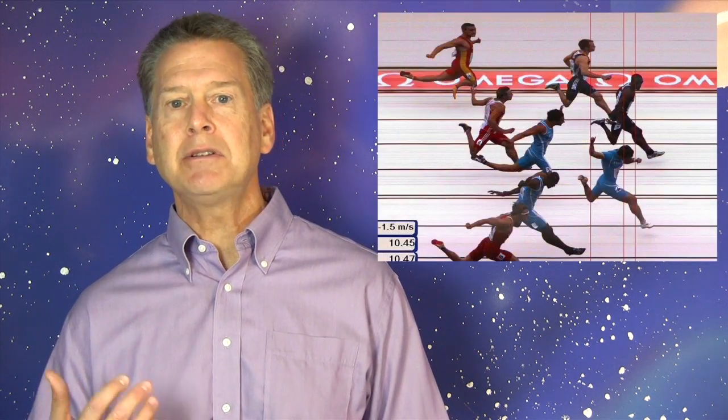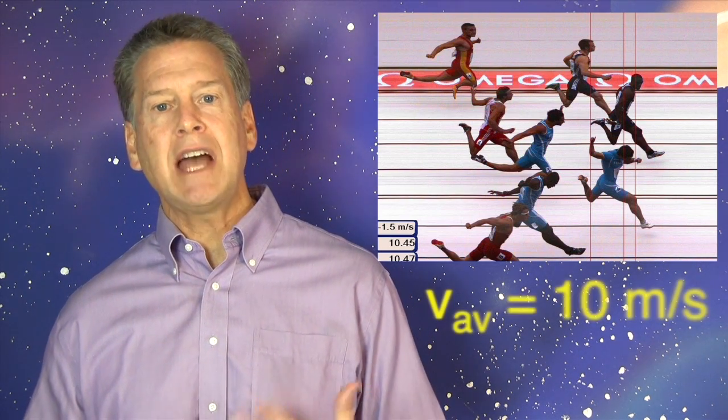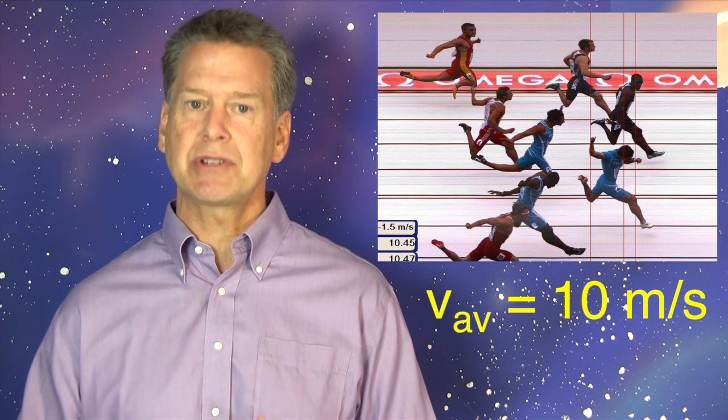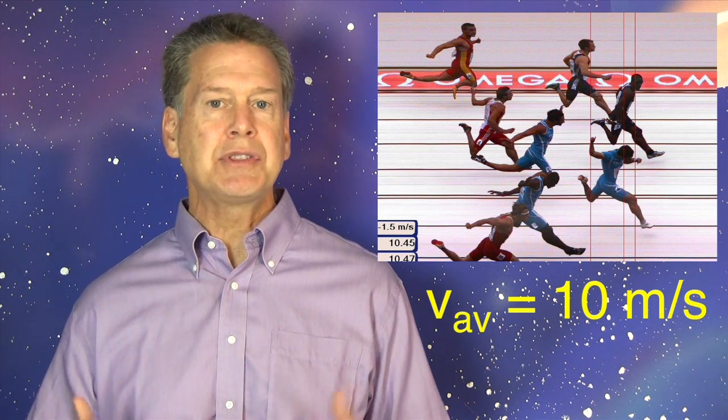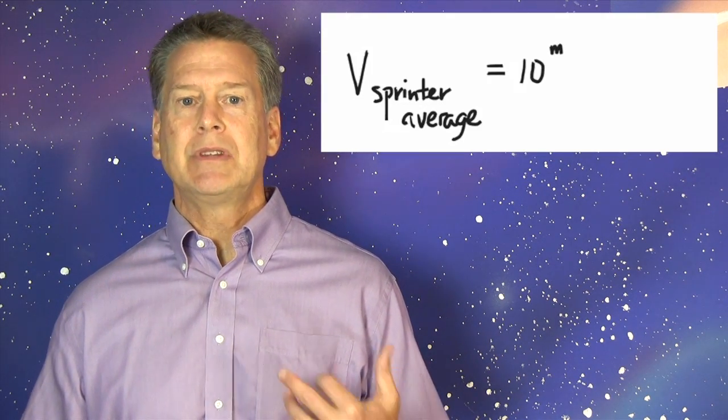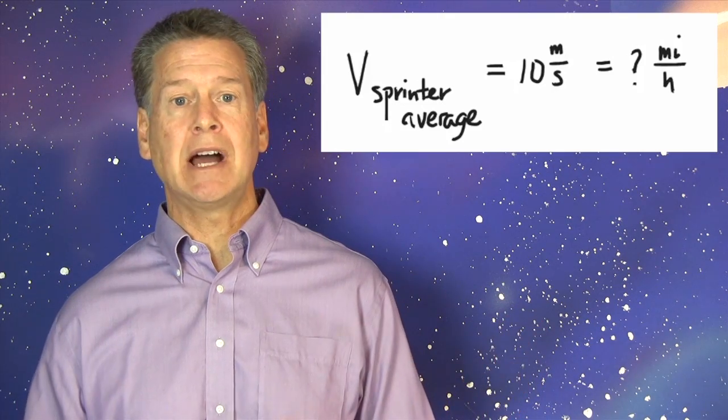Let's do another example, a harder one, to show how the process works with speed units. In Radical Physics video number 6, RP6, we calculated the average speed of a world-class sprinter to be 10 meters per second. Let's convert this speed to miles per hour. V sub sprinter equals 10 meters per second equals how many miles per hour?